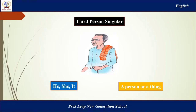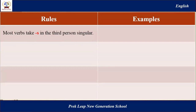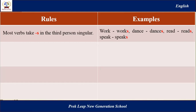What do we use third person singular for? Third person singular is very necessary with the present simple. You can see the spelling rules here. When we use third person singular with present simple, the verb will be changed. Rule number one: most verbs take -S in the third person singular. For example: work becomes works, dance becomes dances, read becomes reads, speak becomes speaks.